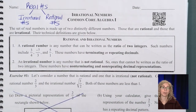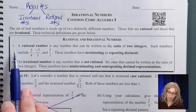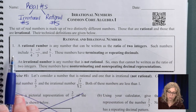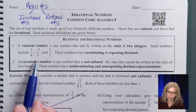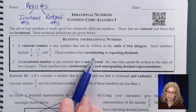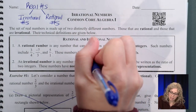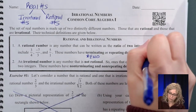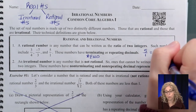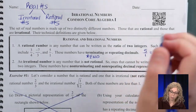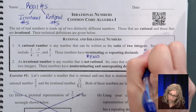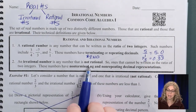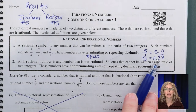Hopefully this is a review. A rational number is any number that can be written as a ratio of two integers. Such numbers include 3/4, negative 7/3, and 5 over 1. These numbers have terminating or repeating decimals. Terminating means the decimals end — 5 over 1 is really just 5.0, it ends. And 1/3 is 0.33 repeating, which is a repeating decimal.